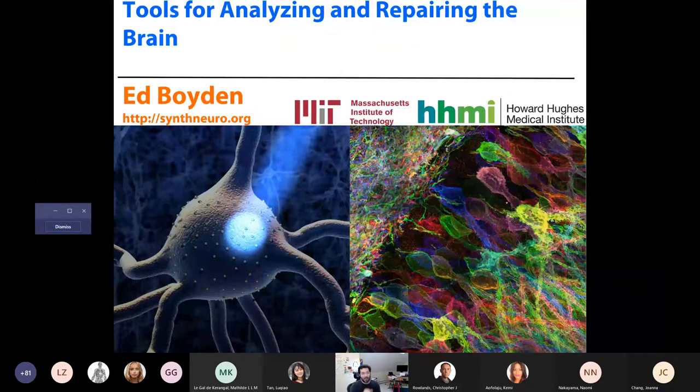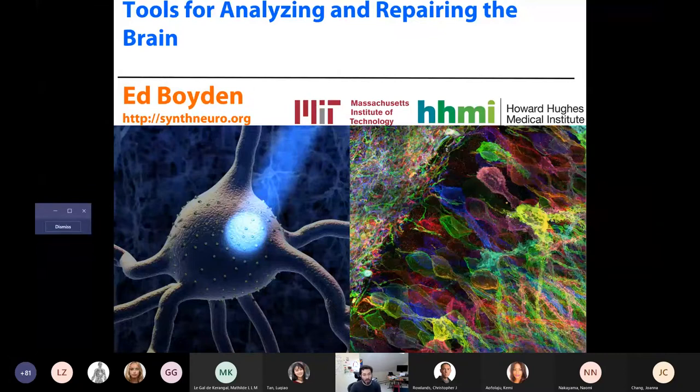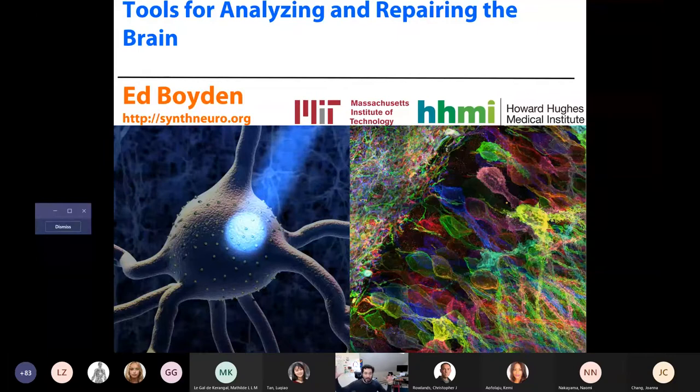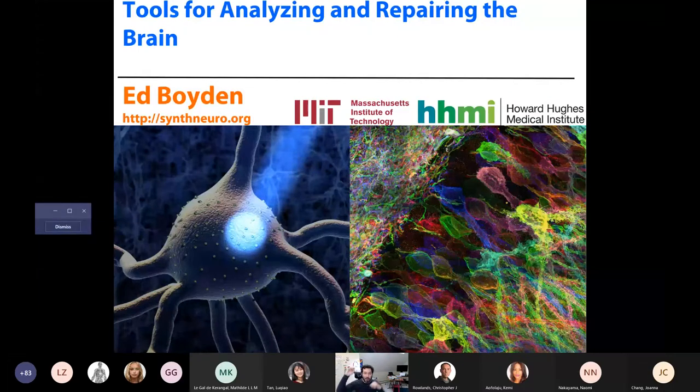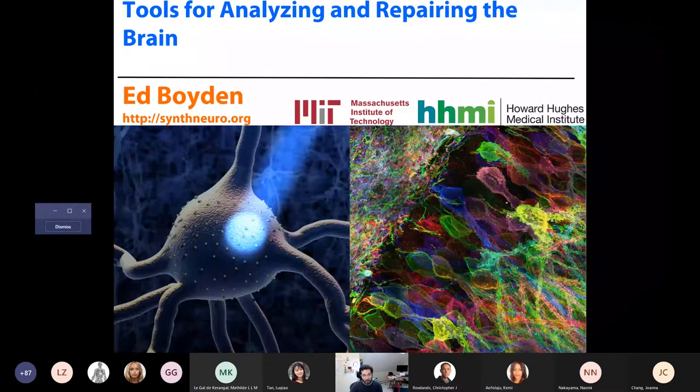But I would argue that there's two really important features that really challenge us in modern biology. How do we cross different spatial scales? Because if you care about the brain, or the immune system, or a cancer, or aging, you're dealing with enormous systems, right? Significant fractions of the body sometimes.